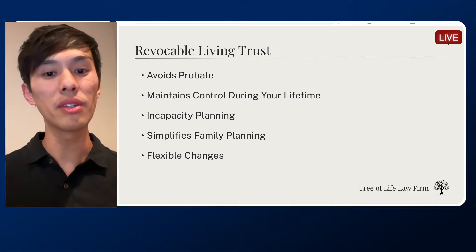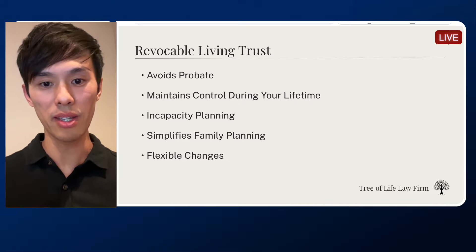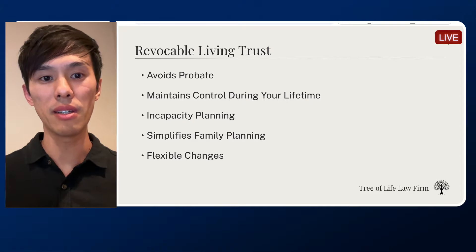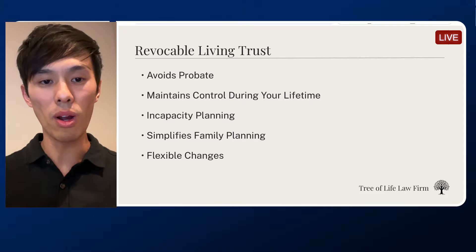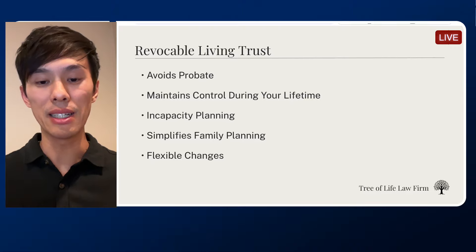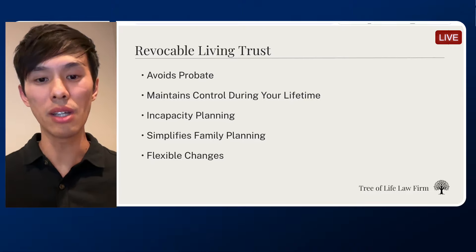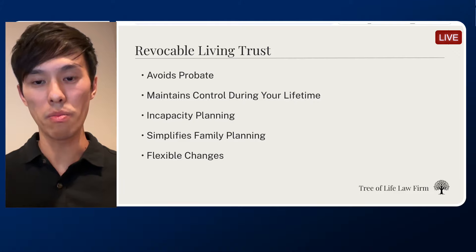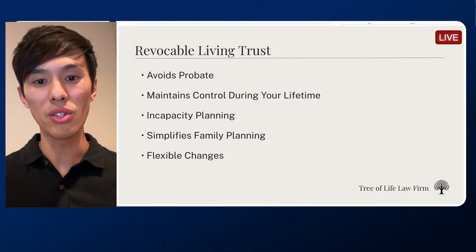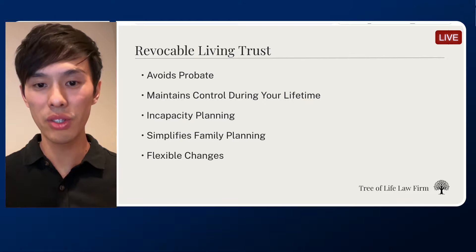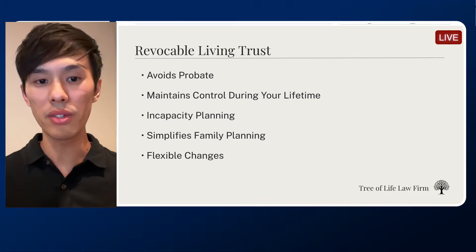I'm going to first start with the living trust — in other words, the revocable trust. When you hear about living trusts, it's a revocable trust. One of the major benefits of a living trust is you maintain control and flexibility. A living trust is basically a legal document that you can use to write down your wishes in terms of who gets your assets when you pass, and who's going to manage the whole process. That is what we call a living trust or a revocable trust.